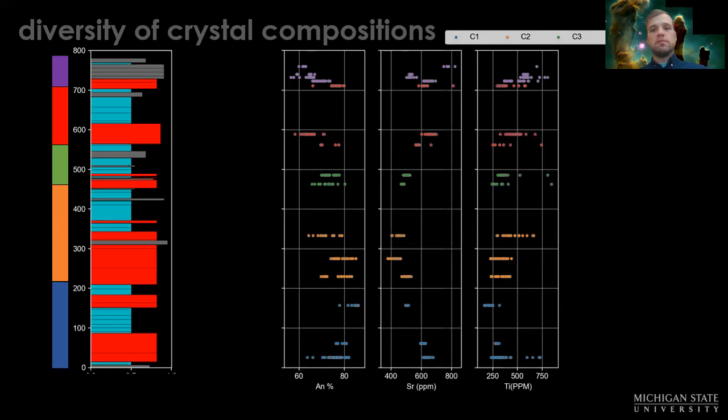We don't see multiple populations or chemical populations of crystals in these lavas at all. They're basically a homogeneous population of crystals in a single lava.